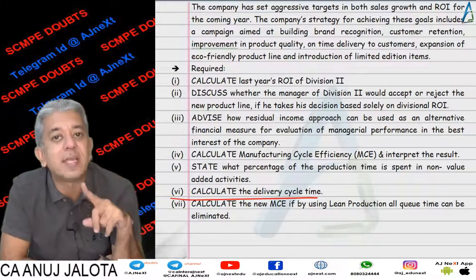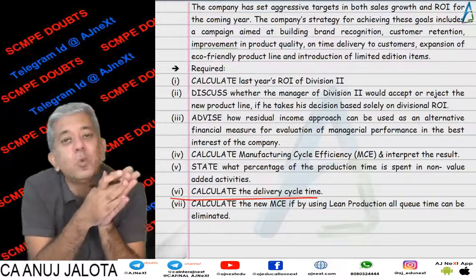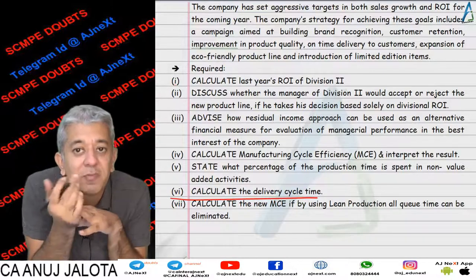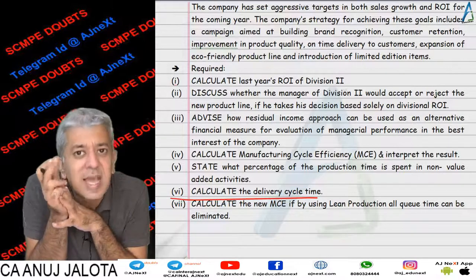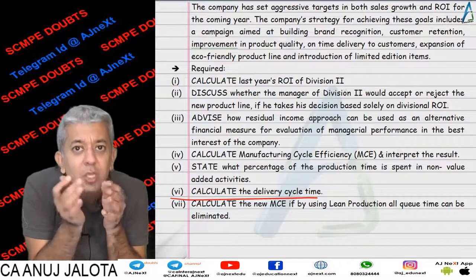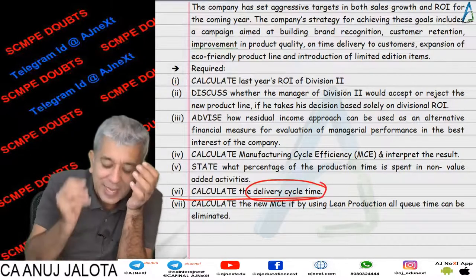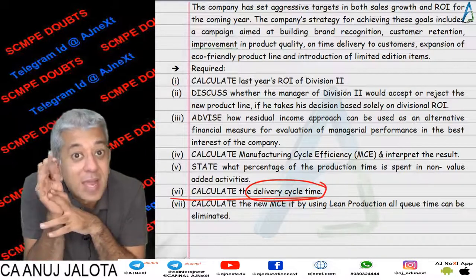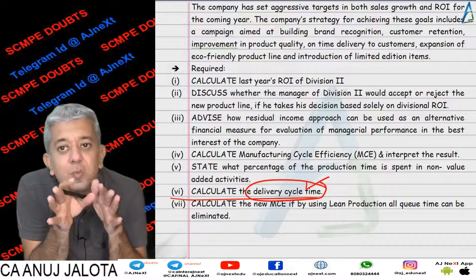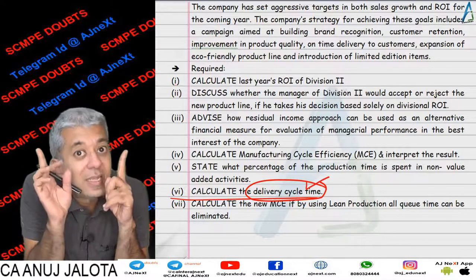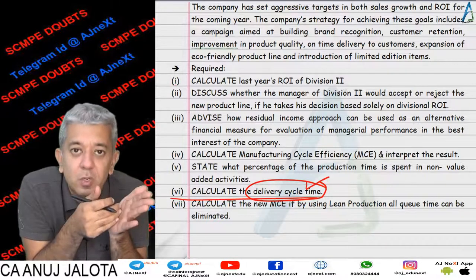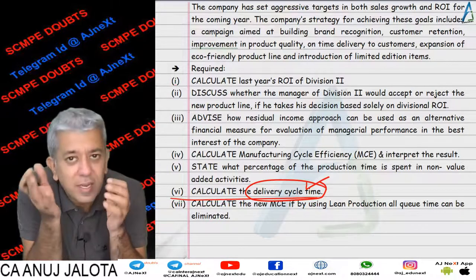In part 6, they asked to calculate delivery cycle time. In delivery cycle time, you include all the times, not only the manufacturing time. If you were to take those 16 days as part of manufacturing time, there would be no difference between manufacturing cycle time and delivery cycle time. That is why you have to take that time as only the time between the customer placing the order and the marketing or order-taking department passing the order to the factory.